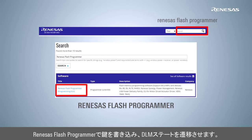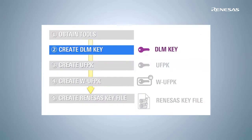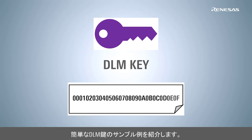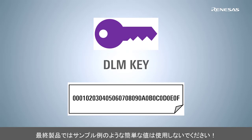Now we will define a DLM key. For this example, we will use a simple 16-byte value. In practice, use a random, hard-to-guess value and store it securely, since this key can re-enable debugger and programmer access.